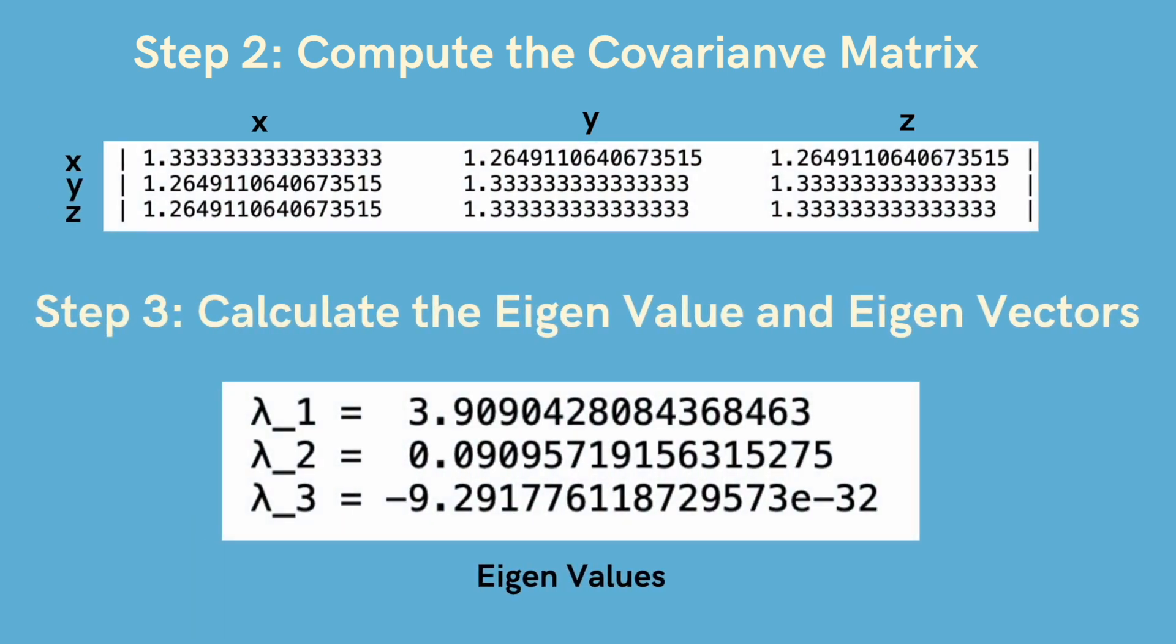After that we'll compute the covariance matrix and post that we'll also calculate the eigenvalues and the eigenvectors. As you can see over here this is the covariance between xx, xy, xz and so on and these are the eigenvalues that we have computed from the covariance matrix.